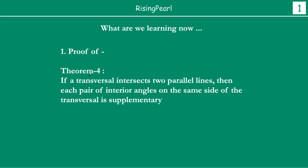So the theorem goes like this and we are calling it Theorem 4. We have seen three theorems in the last few episodes, and today we are talking about this fourth theorem which we are going to prove today. So if a transversal intersects two parallel lines, then each pair of interior angles on the same side of the transversal is supplementary.